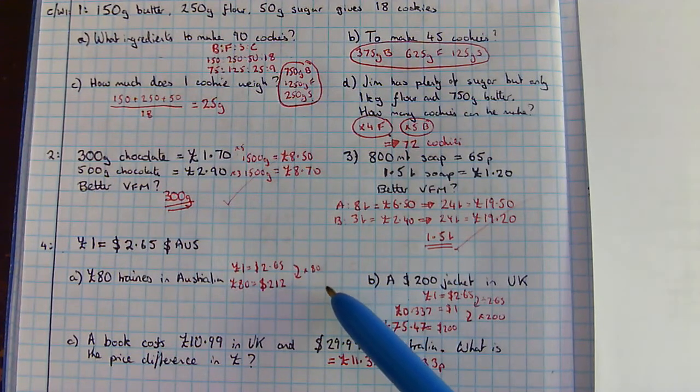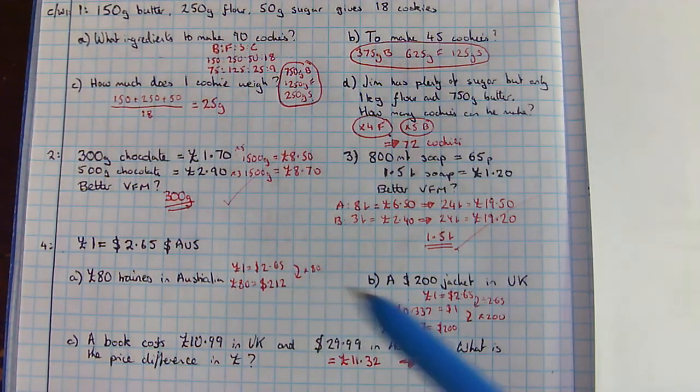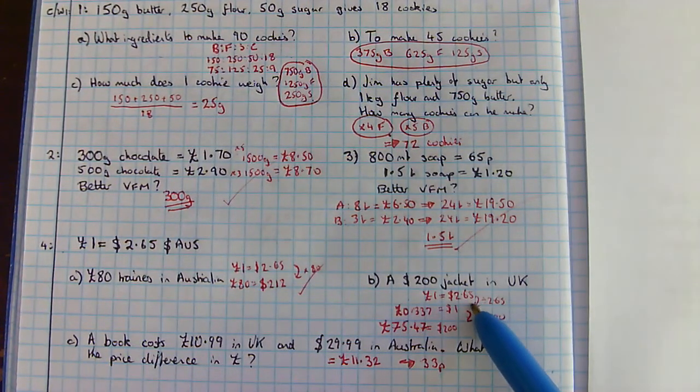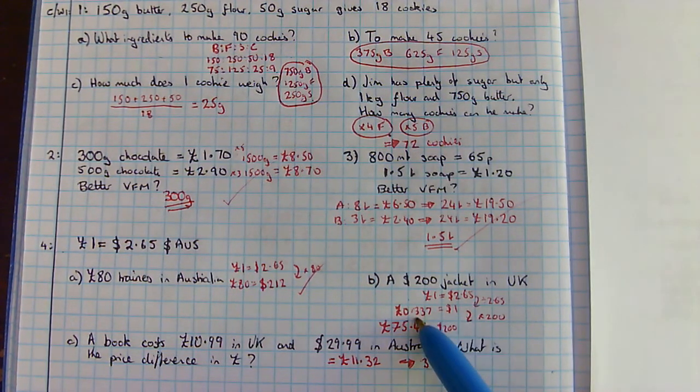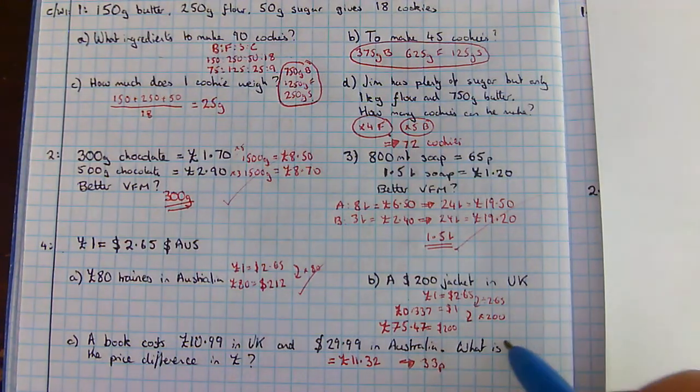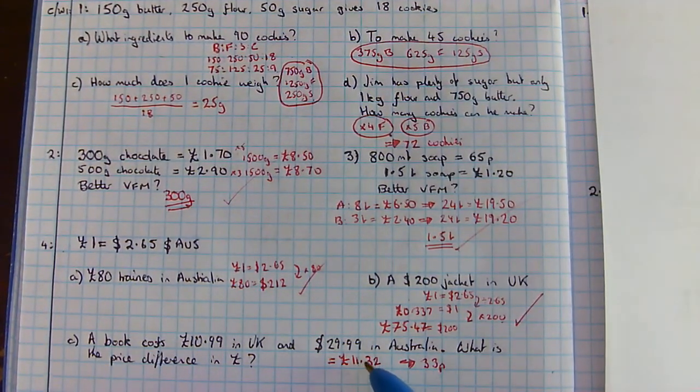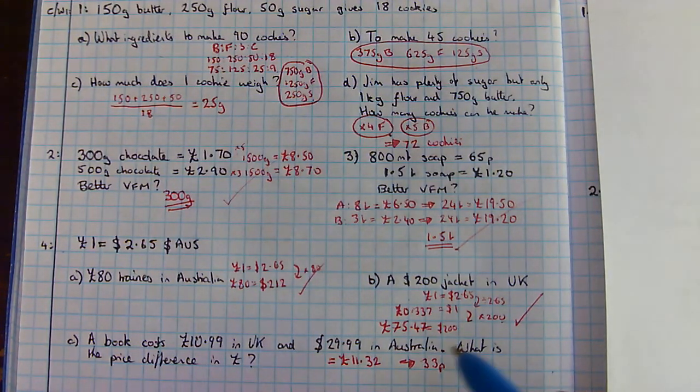For A, timesing your 265 by 80 gave you 212 Australian dollars. Here, because you've given the money in dollars, you need to use a unitary method. So, divide by 265 gave you 0.337 pounds for $1. Times by 200 gave you £75.47. Using the same method, the $29.99 book would be £11.32 in pounds, so the price difference is 33 pence more expensive in Australia.